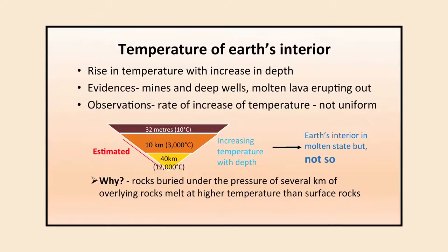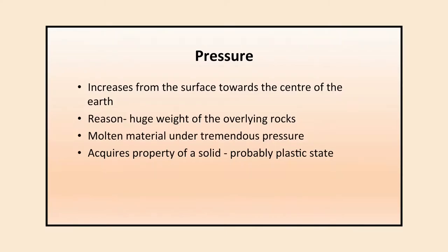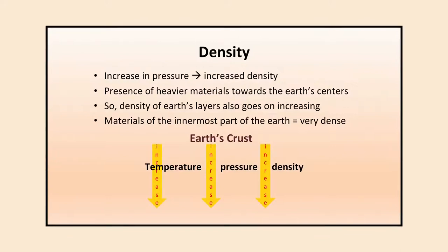In reality, the Earth is not in a molten state, because the rocks buried under the pressure of several kilometers of overlying rock melt at higher temperatures than surface rock. Because of the overlying pressure, the rocks do not melt easily — they have higher density and do not melt. Therefore the whole of the Earth's interior is not in a molten state.